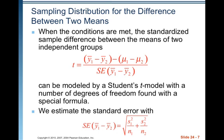This can be judged by a Student's t model with a number of degrees of freedom found with a special formula. We estimate the standard error with the square root of the sum of the variances estimated by the individual sample standard deviations.